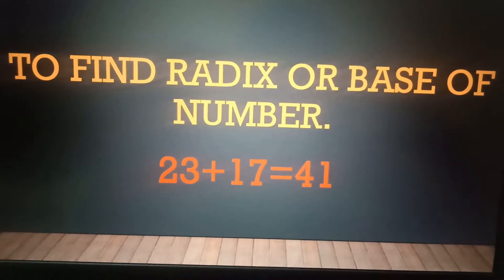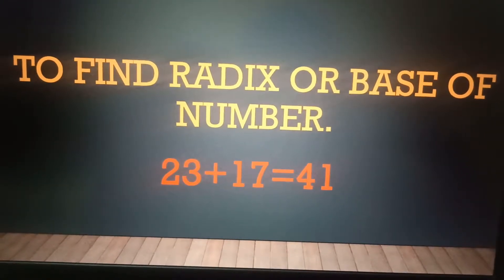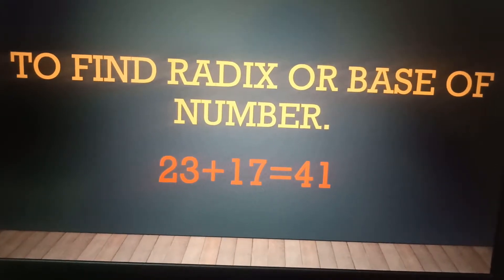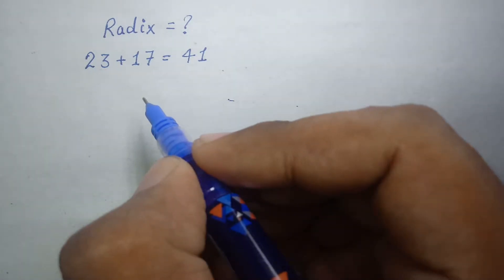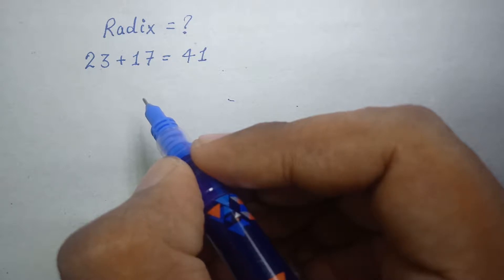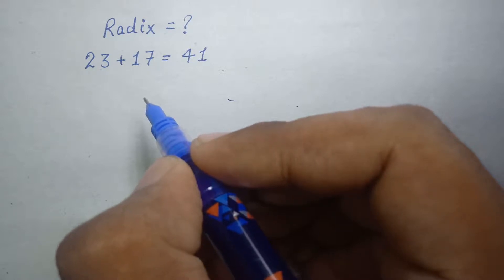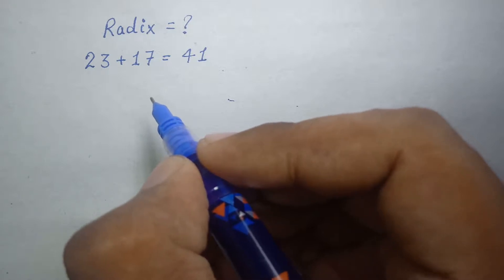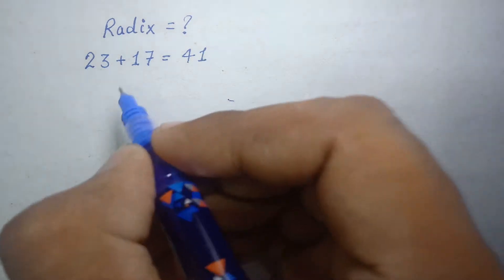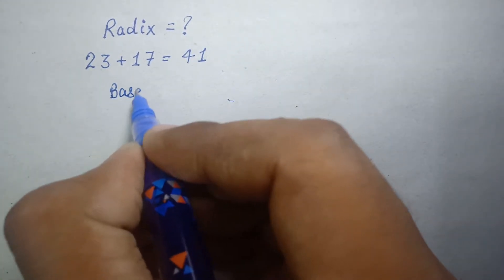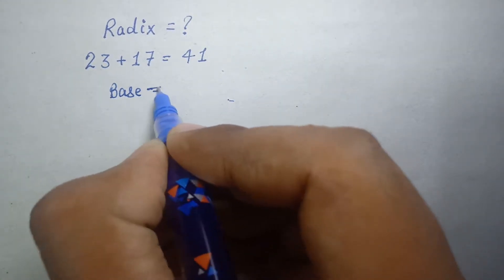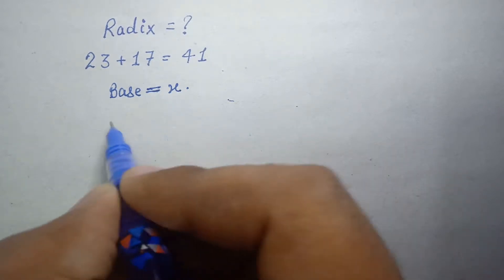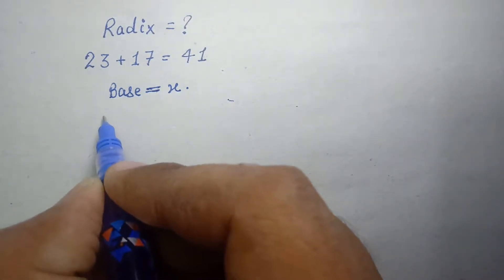In this video we will solve some problems. The first problem is to find the radix or base of a number. We have to find the base of each number so that this equality holds true. If we assume the base of every number as 10, then this equality is wrong. So let's suppose that the base is x.